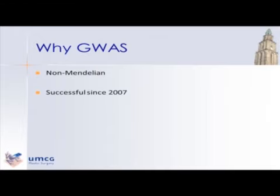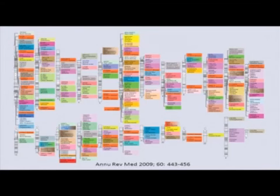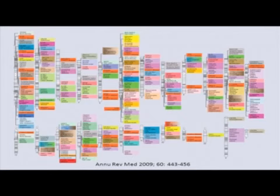We choose this because we want to study non-Mendelian Dupuytren's disease. Another important reason is that these studies are highly successful. They're only recently possible because you need chips with lots of markers on them. Since 2007, these are all genes which have been discovered — chromosome 1, chromosome 2, and so on through the X and Y chromosome. These are all genes discovered in, for instance, diabetes, cancer, etc. This data is from 2009.